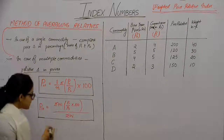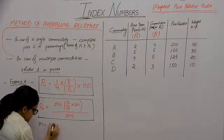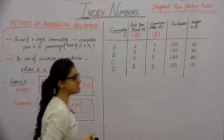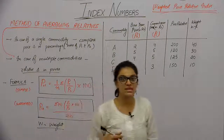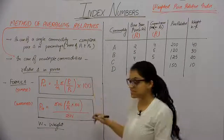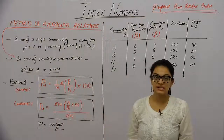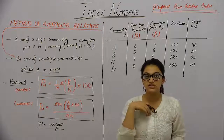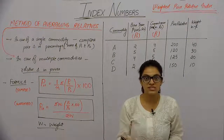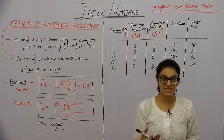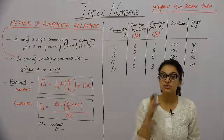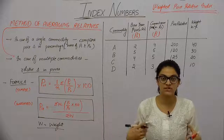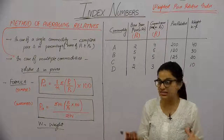Now, what is W? W is the weight. How do we calculate this weight? That is an important part of the entire analysis. Weight is calculated by seeing how much expenditure was done on a particular commodity in the base year — what is its relative weight, and how does it stand relative to total expenditure.